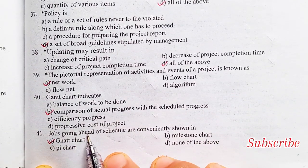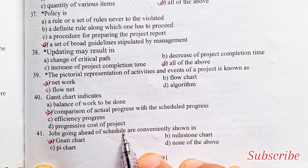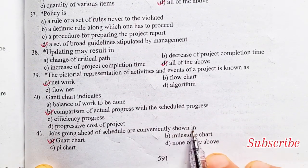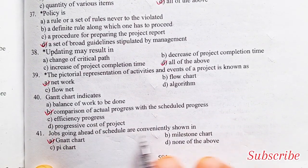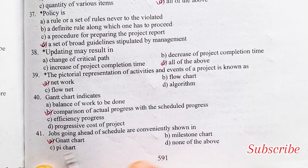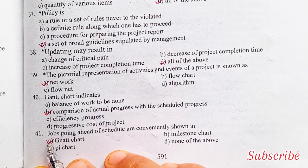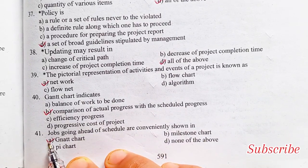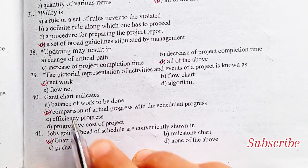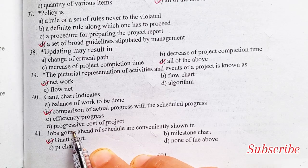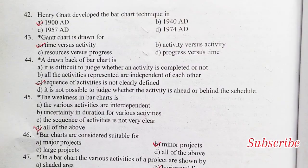Jobs going ahead of a schedule are conveniently shown in: Gantt chart, milestone chart, P chart. Option A is the right answer — Gantt chart.